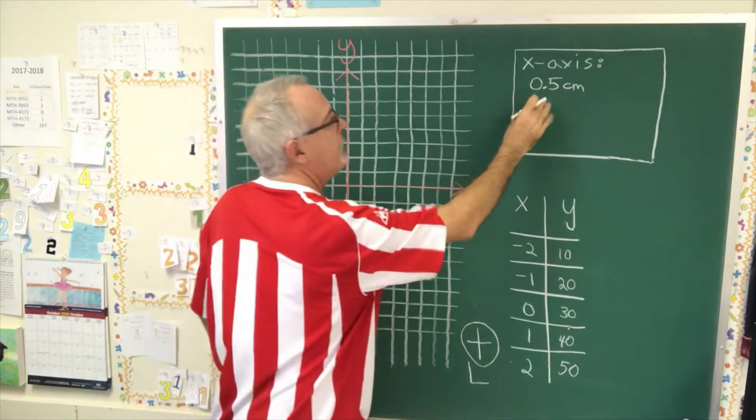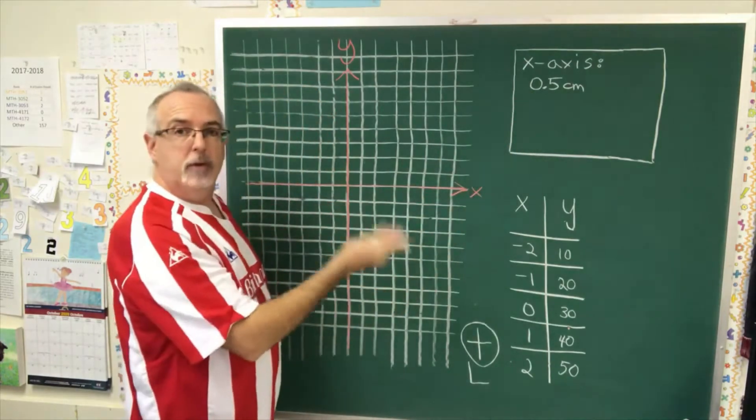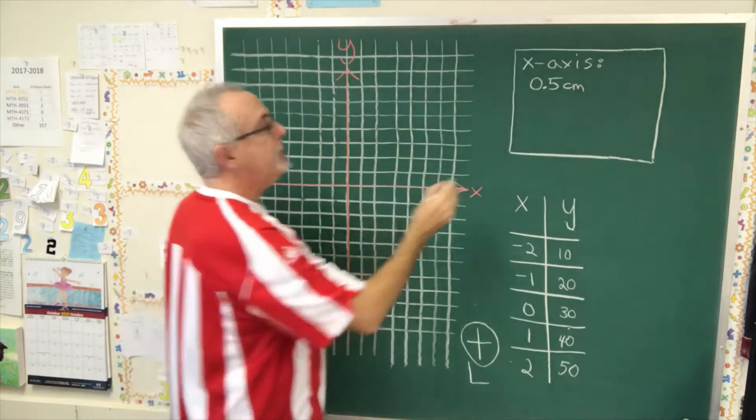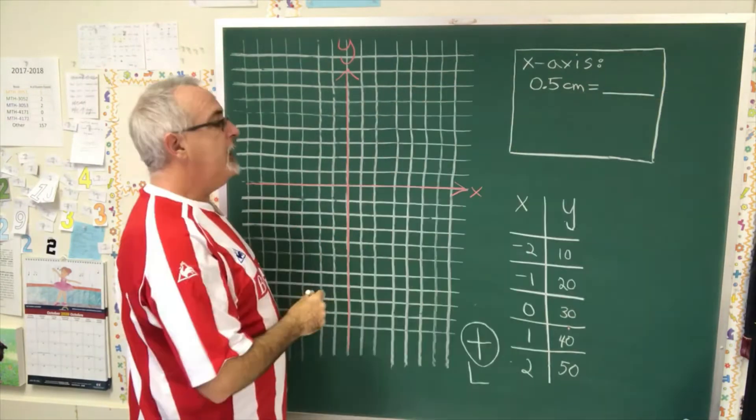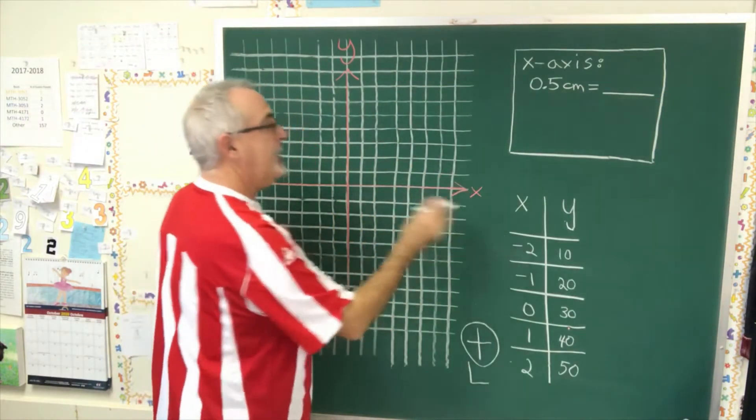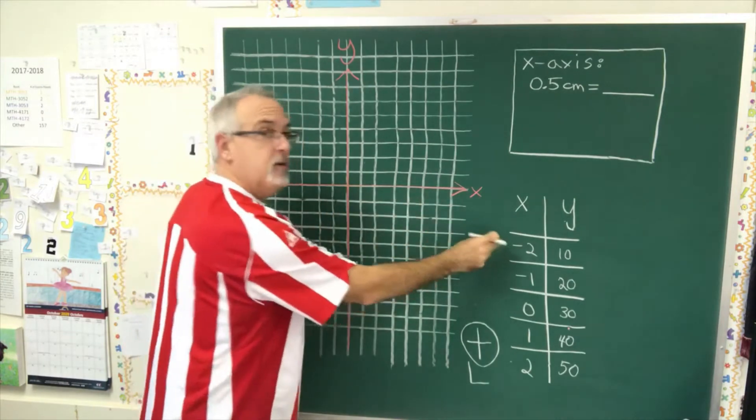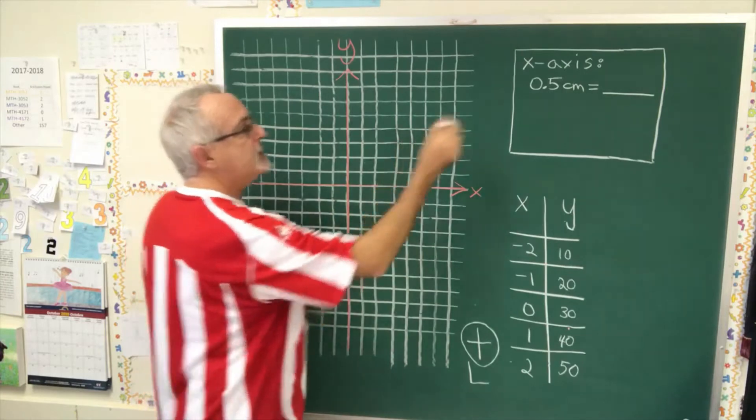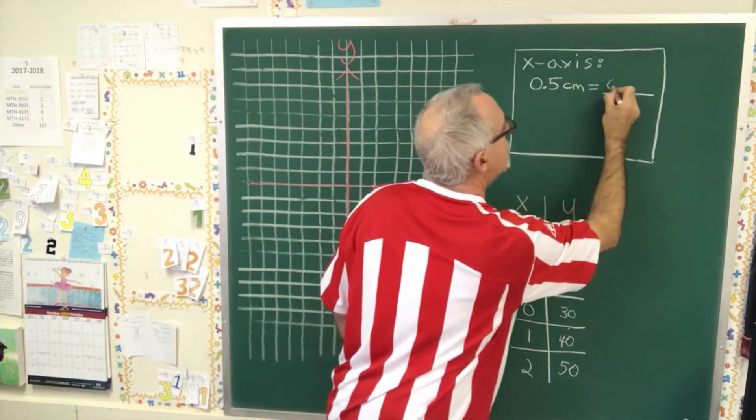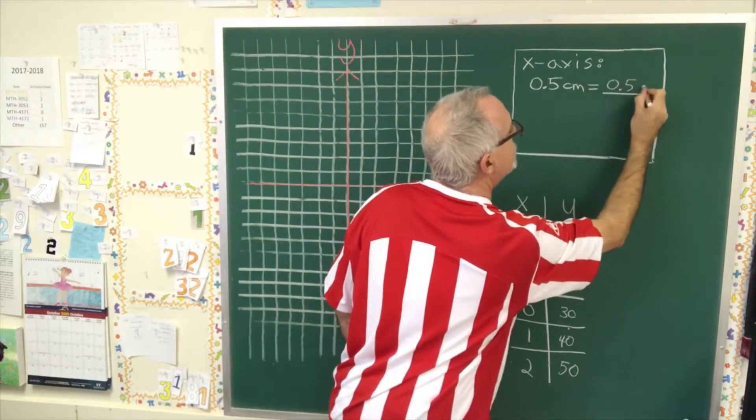Most graph paper, the squares are 0.5 centimeters by 0.5 centimeters. Is equal to, and then I have to explain how many units fit in a square. Since I want to do two squares for each unit, that means 0.5 centimeters represents 0.5 units.